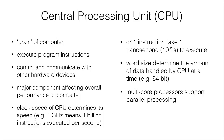Let's look at some of the basic concepts of CPU — Central Processing Unit. It is the brain of a computer and its function is to execute program instructions. It also controls and communicates with other hardware devices in the computer, and it is the major component affecting the overall performance of a computer.